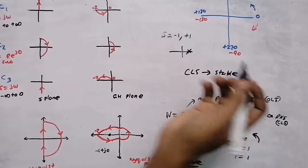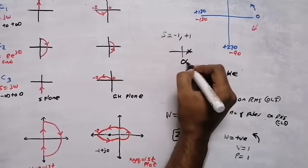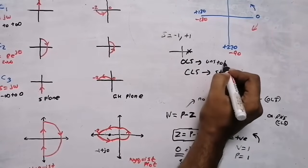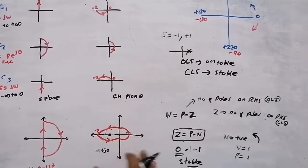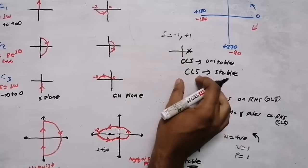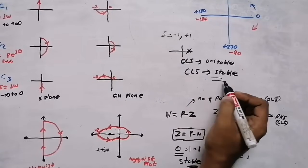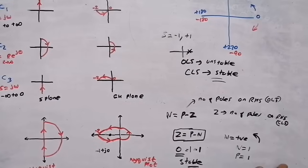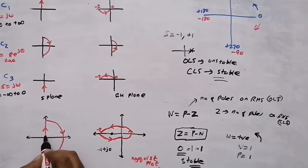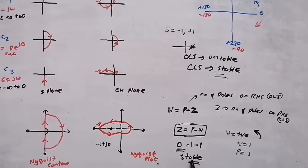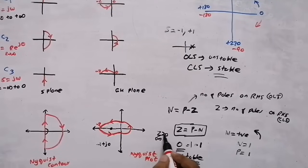The closed loop system is stable. Although the open loop system is unstable, by drawing the Nyquist plot we found that the closed loop system is stable. If Z equal to 0, the system is stable; if Z is greater than 0, the system is unstable. The next problem will involve a case where there is a pole at the origin, which changes the Nyquist contour.